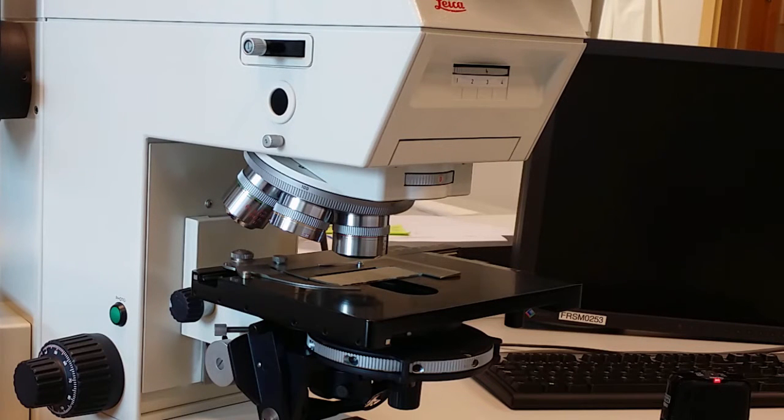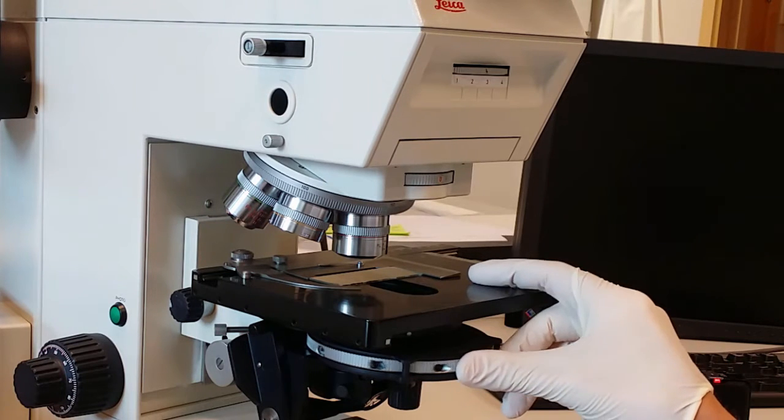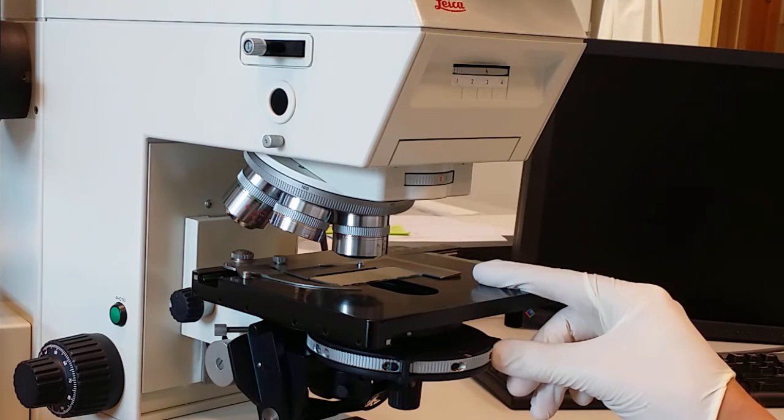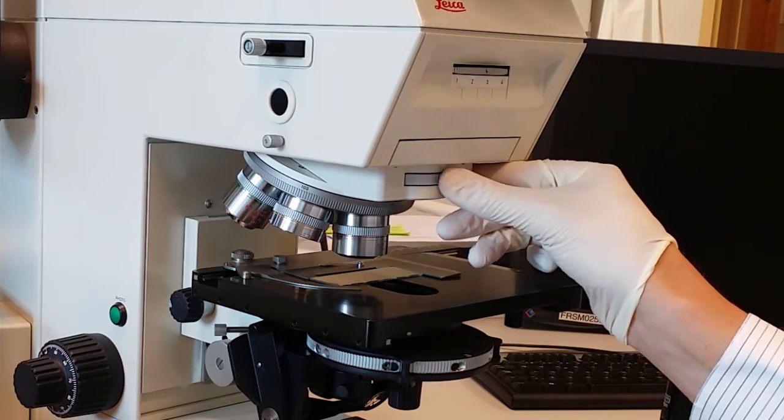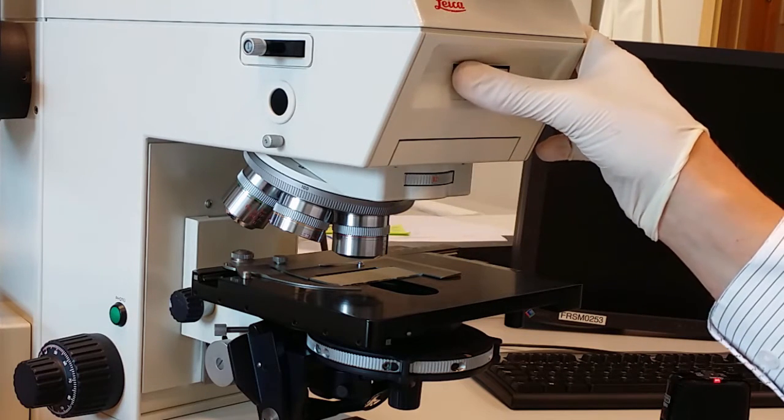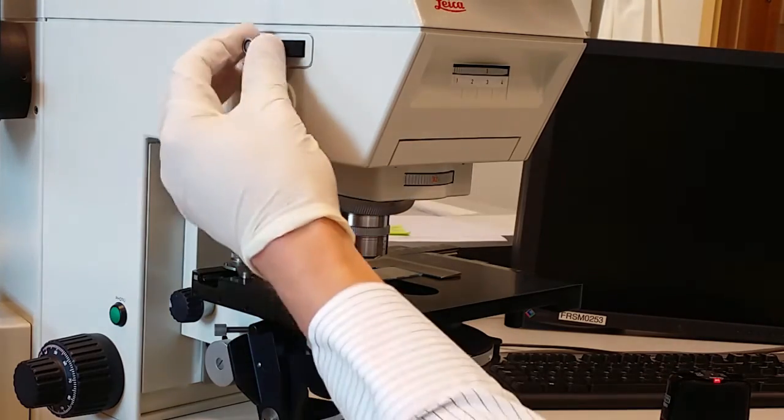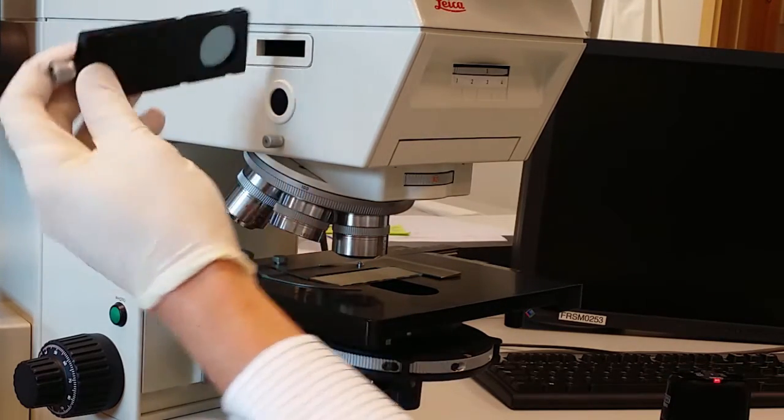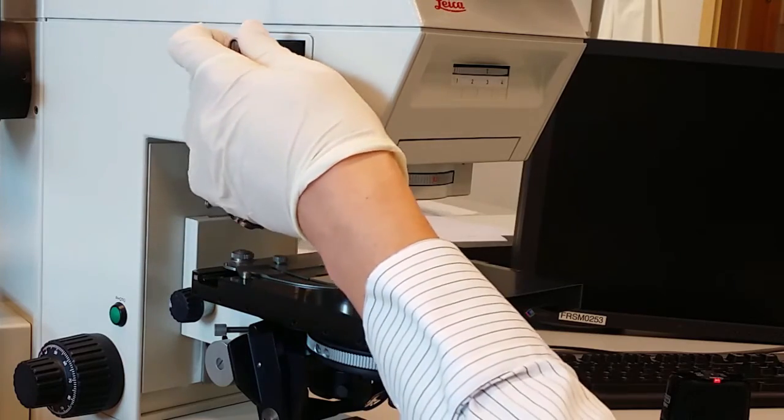So now I set up the microscope for differential interference contrast. First I change the condenser aperture so it fits the objective. Then I change this Wollaston prism on top and put it at the right section B2 here. Then I change the reflector so it goes into position 1. And then I change the polarizer so that it is in the right way. So I put it in with the polarizer upwards.